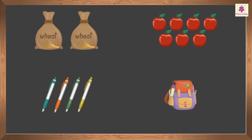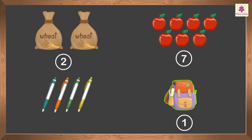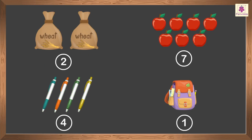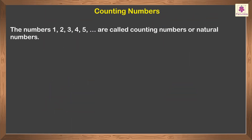In our daily life, we count various things for various purposes. We count things using counting numbers. The numbers one, two, three, four, five, and so on are called counting numbers or natural numbers.